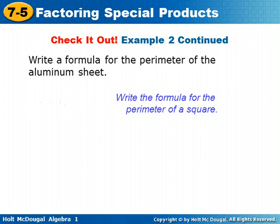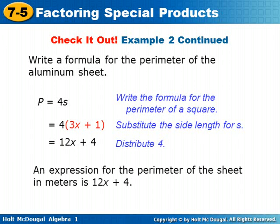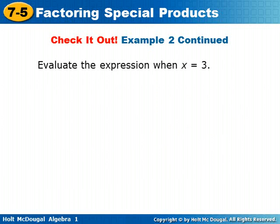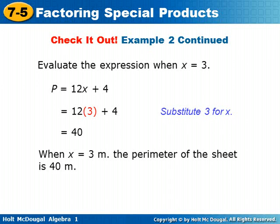We need to write a formula for the perimeter, which equals 4 times the side length. We substitute the side length 3x plus 1, so we get 4 times 3x plus 1. Distribute the 4 and we get 12x plus 4. An expression for the perimeter of the sheet in meters is 12x plus 4. Now we evaluate when x equals 3: perimeter equals 12 times 3 plus 4, which is 40. When x equals 3 meters, the perimeter of the sheet is 40 meters.